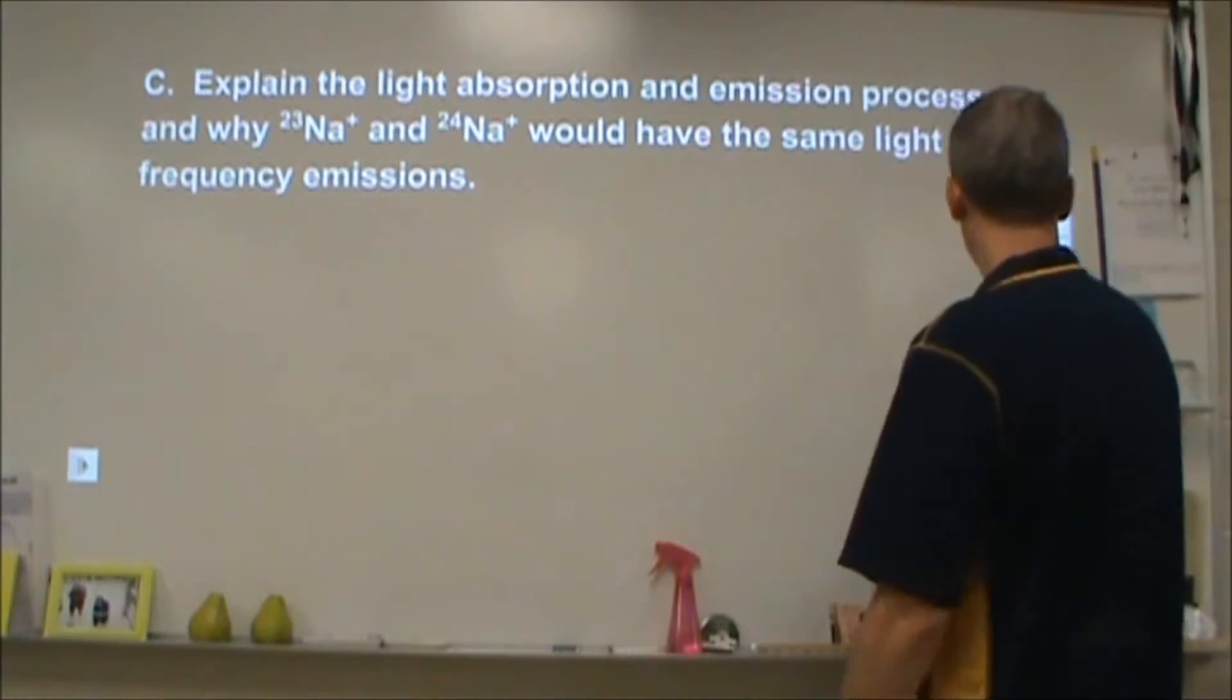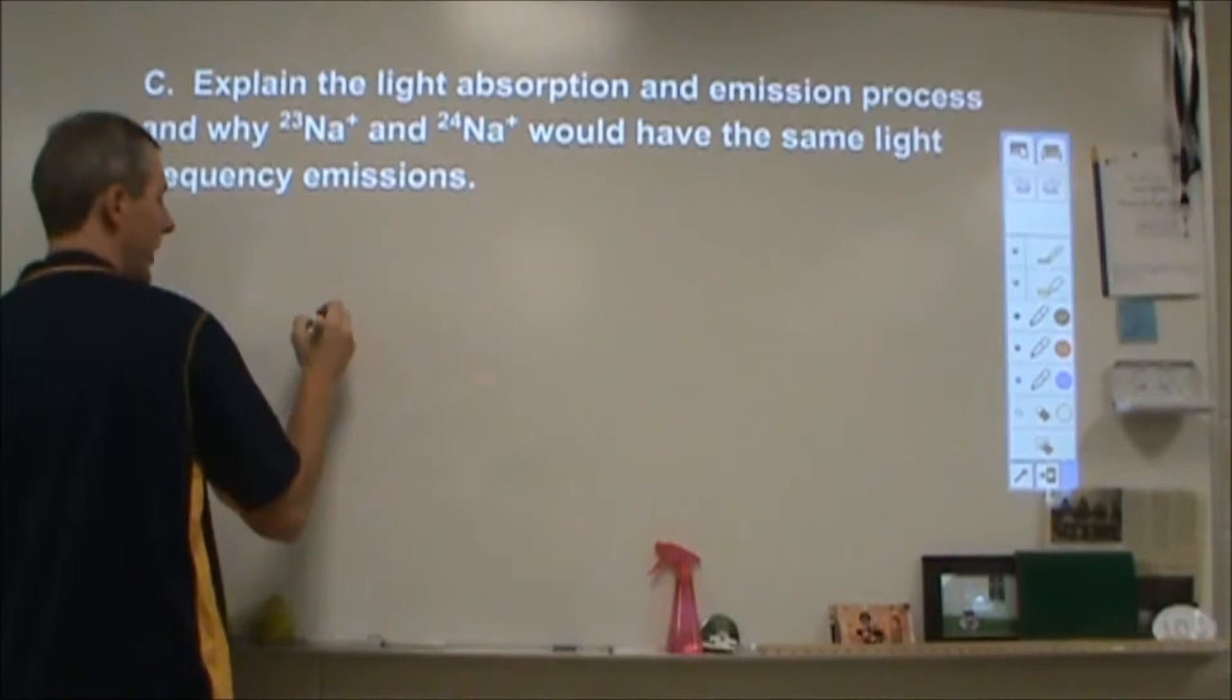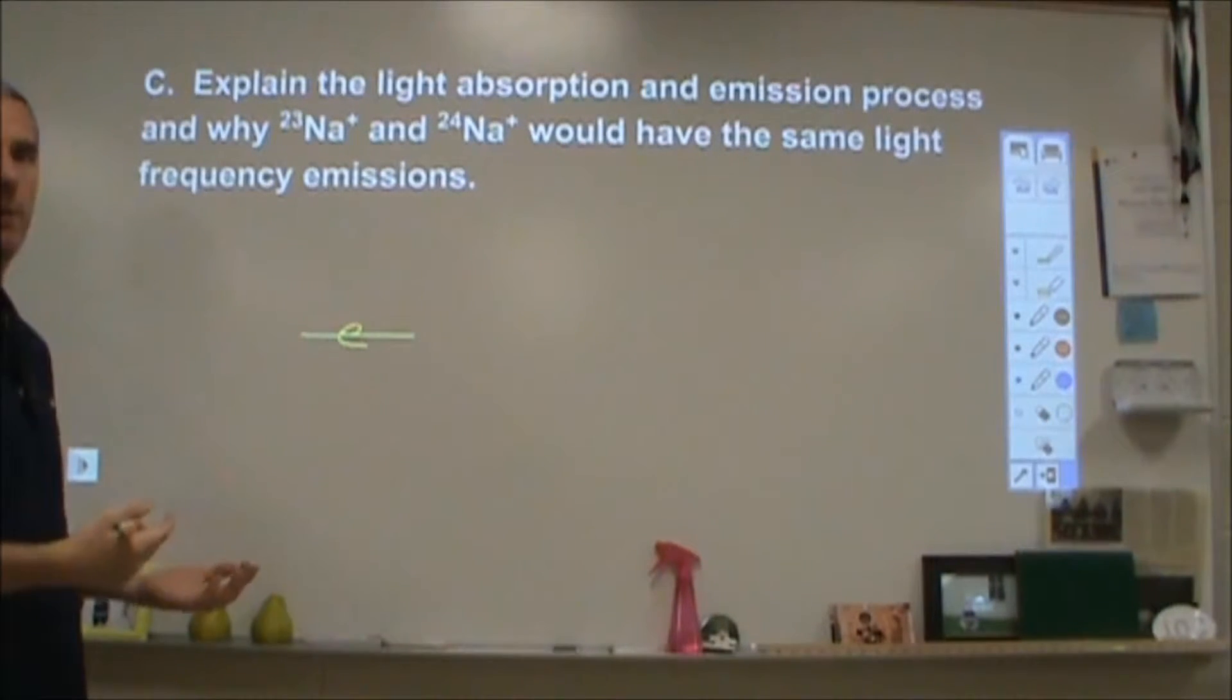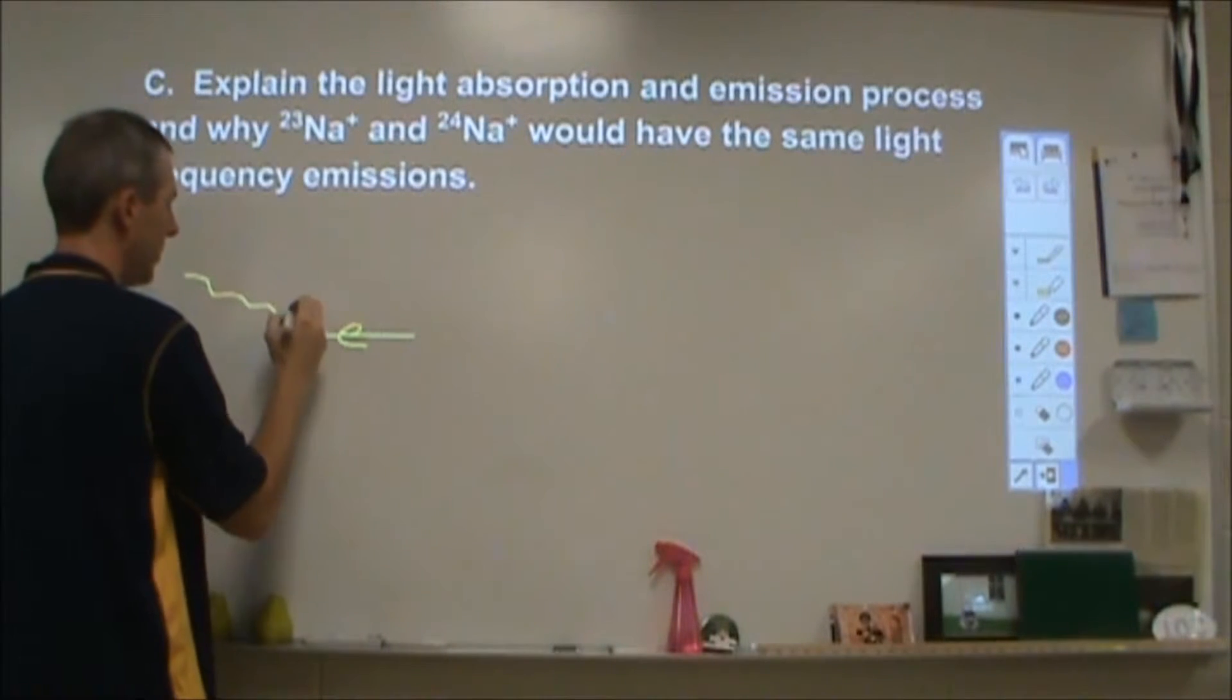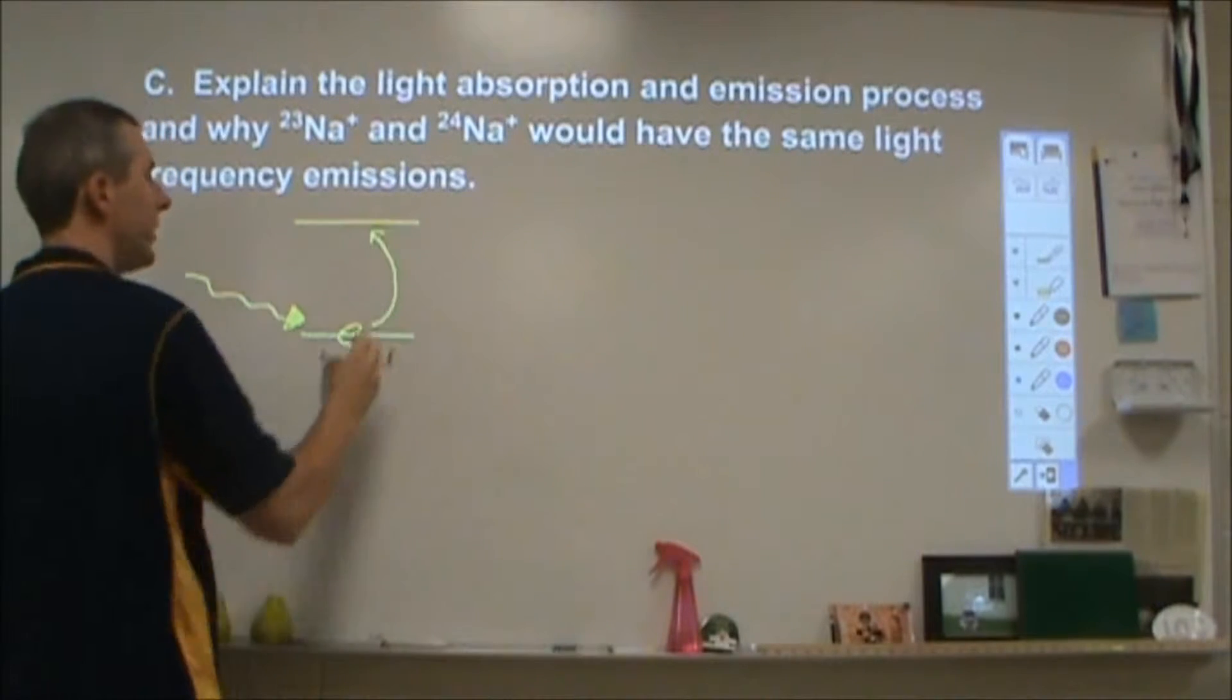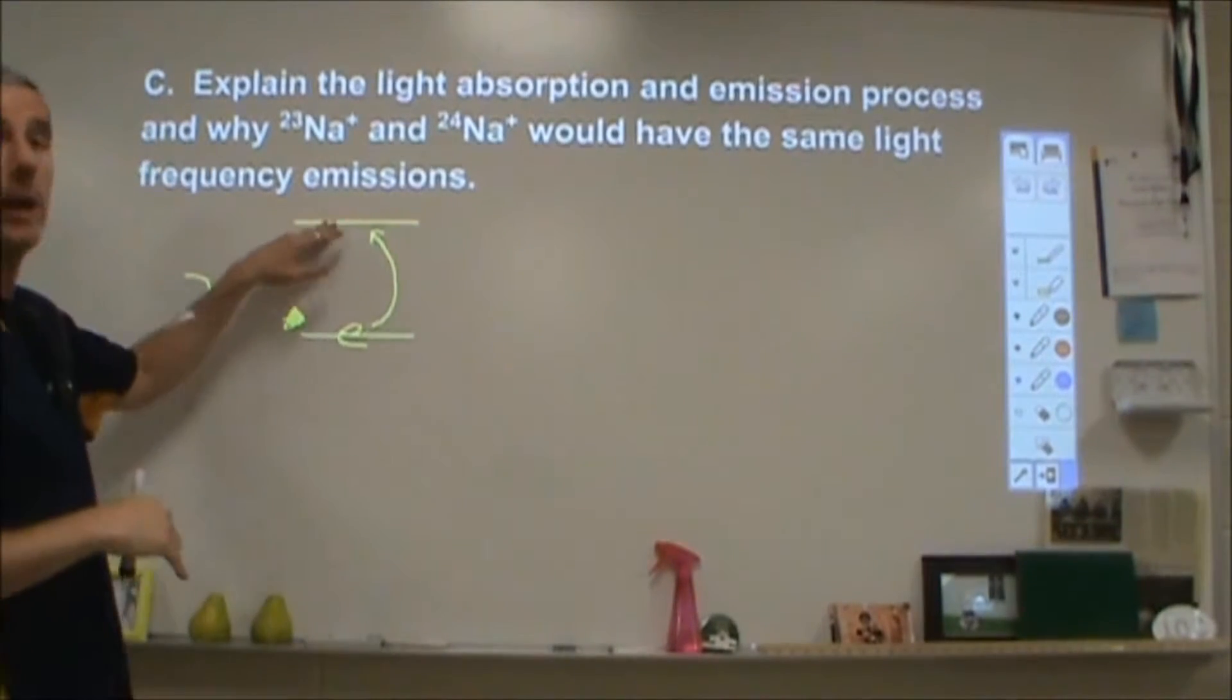Our next question goes into light absorption and emission process. Why would 23 and 24 sodium plus ions have the same light frequency emissions? The light emission process is that you have an electron in some kind of path around the atom. And then when light comes in and is absorbed by that electron or interacts with that electron, that electron will move up to a different speed and energy and path around that atom that's at a higher energy state.